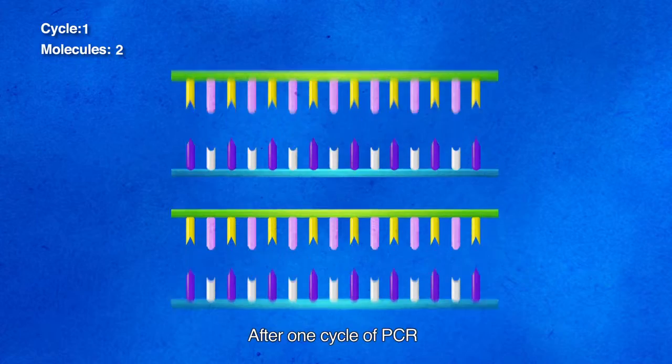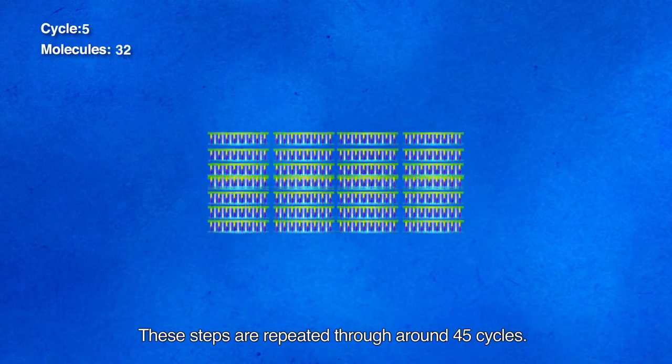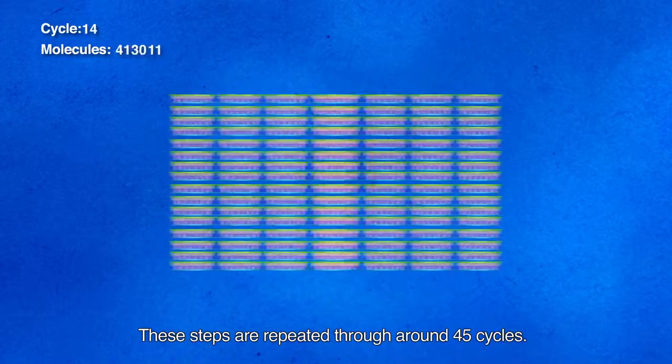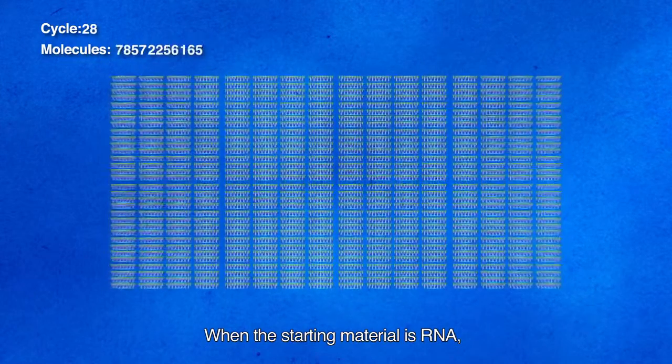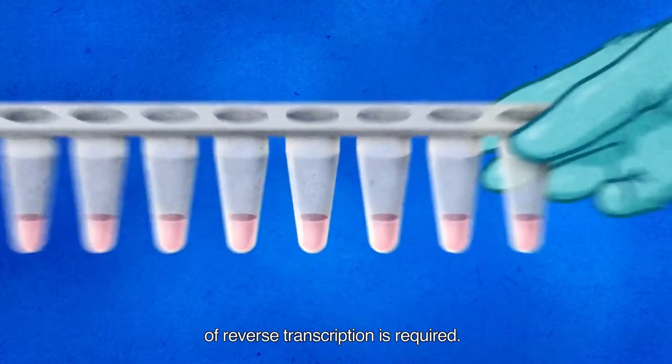After one cycle of PCR, there are twice copies of the target DNA. These steps are repeated through around 45 cycles. When the starting material is RNA, one first additional cycle of reverse transcription is required.